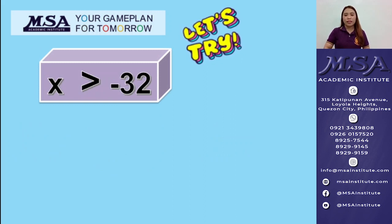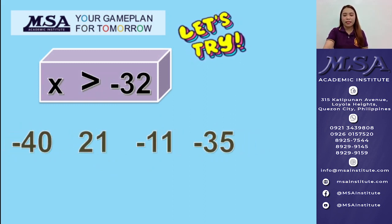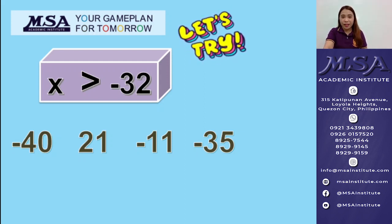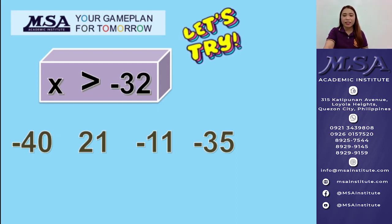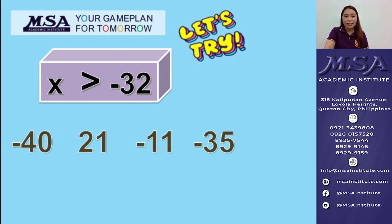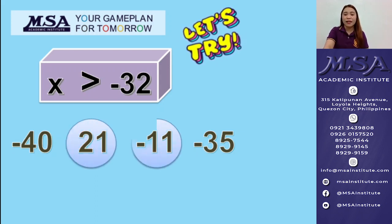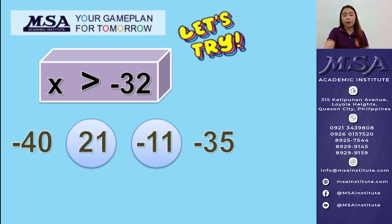So next activity: we are given an inequality and a set of choices. All you have to do is to choose which among them can satisfy the given inequality. The first one, we have X is greater than negative 32. The correct answer here is 21 and negative 11 — they are both greater than negative 32.